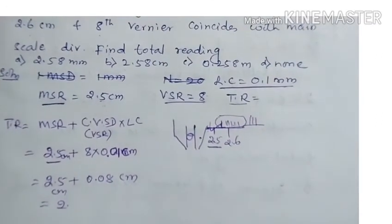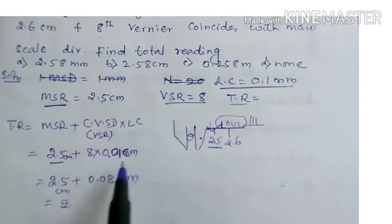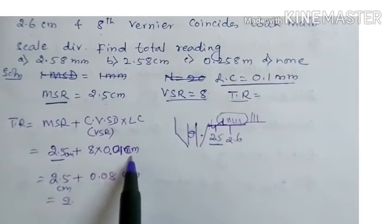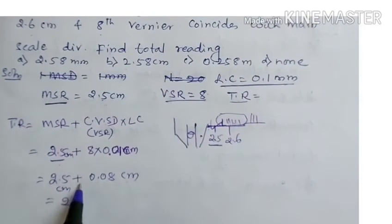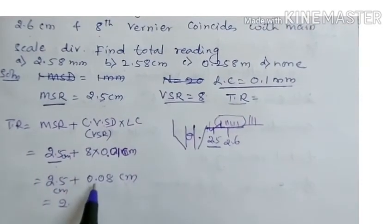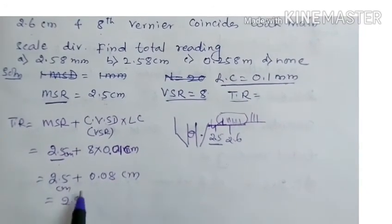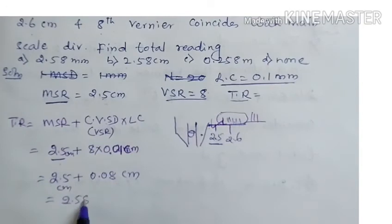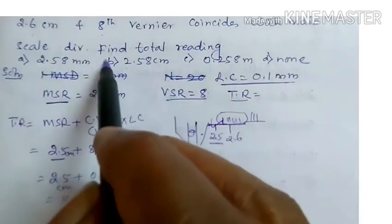MSR is 2.5 cm. So total reading is 2.5 plus 8 into 0.01, which is 0.08 centimeters. That gives 2.5 plus 0.08 equals 2.58 centimeters.